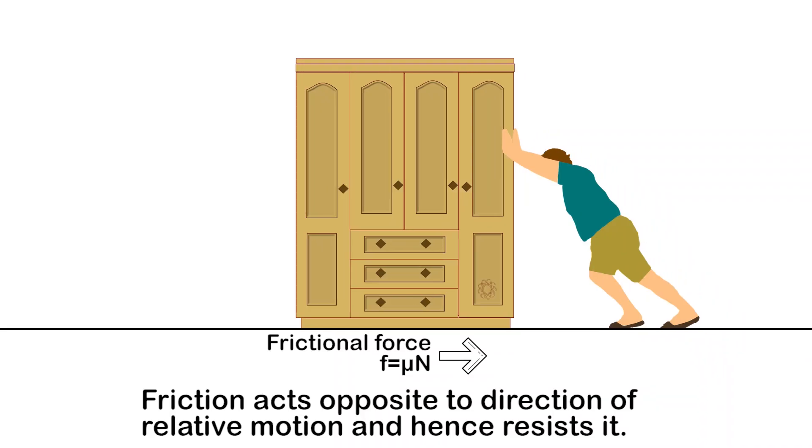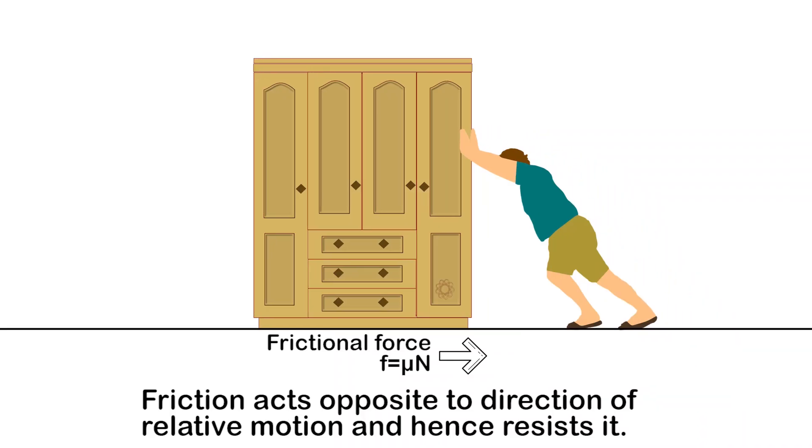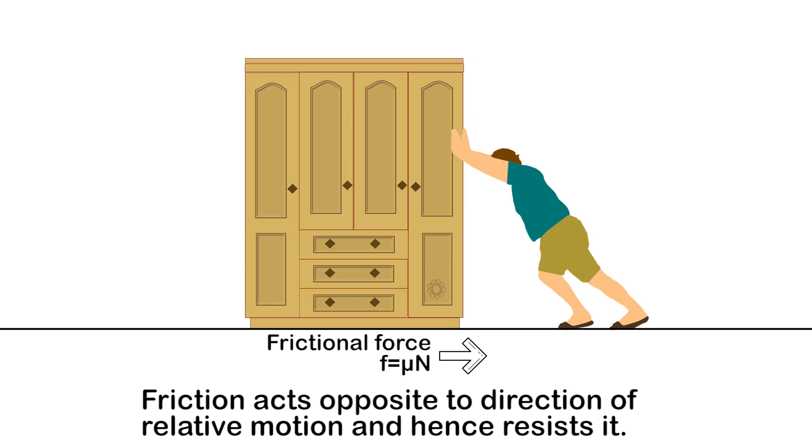Friction is the force between two surfaces in contact which resists the relative motion between both of them. So whenever two surfaces moving relative to each other come in contact, the frictional force between these two surfaces tends to stop the relative motion between them.